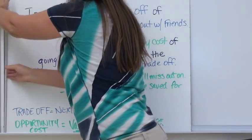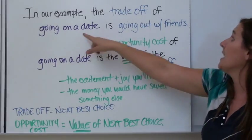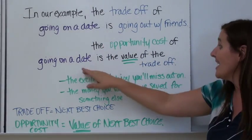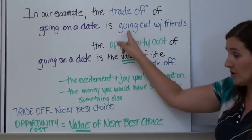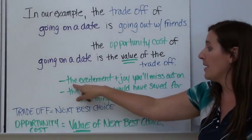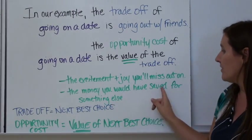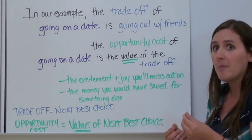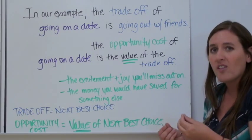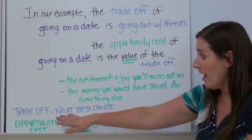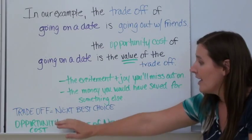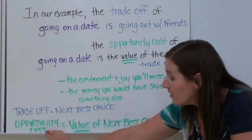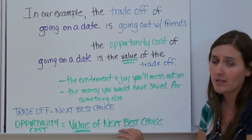So in our example, the trade-off of going on a date is going out with friends — you're giving up going out with your friends to go on that date. The opportunity cost of going on that date is the value of the trade-off: the excitement and joy you'll miss out on, and the money you would have saved, because you're spending more on the date than you would with friends. That money you would have saved could have bought something else — that's the opportunity cost. To summarize: the trade-off is the next best choice, the thing you gave up to do choice number one. The opportunity cost is the value of that next best choice you gave up.